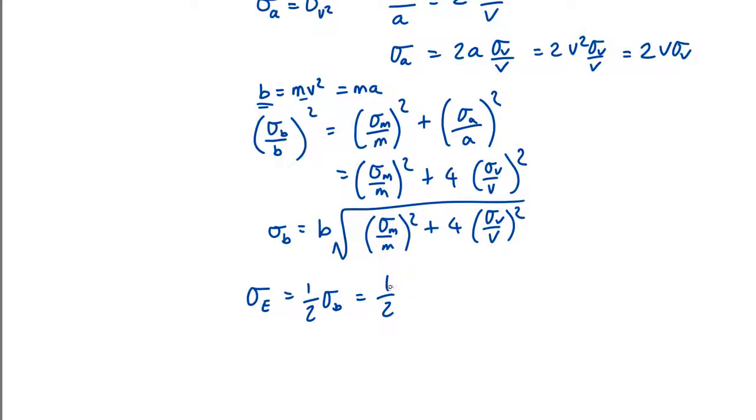which is mv squared times root sigma m over m squared plus four sigma v over v squared.